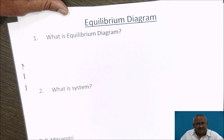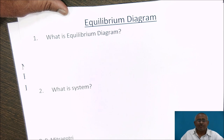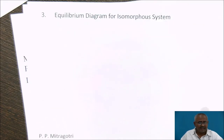Equilibrium diagrams are drawn considering equilibrium conditions. An equilibrium diagram is generally a plot of temperature versus composition. A system is a part of the surroundings under study, and we are going to construct equilibrium diagrams for binary systems. A binary system is a system having two components, and in metallurgy, when we consider two components, it is an alloy system of two metals A and B.